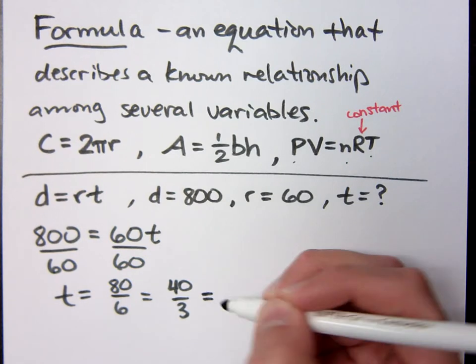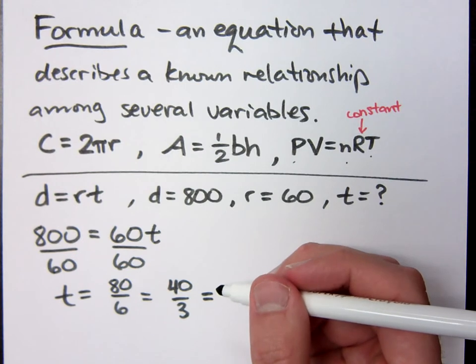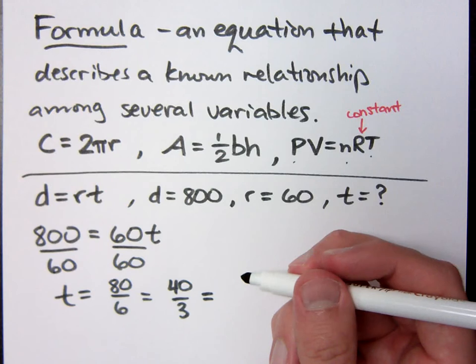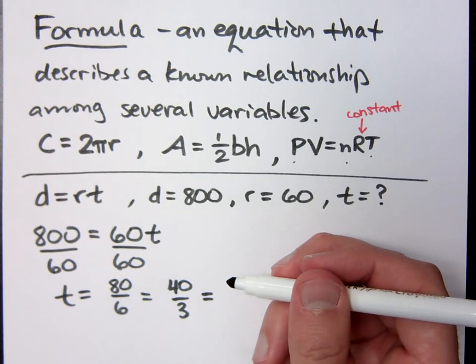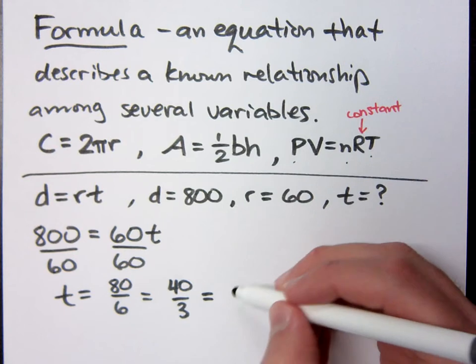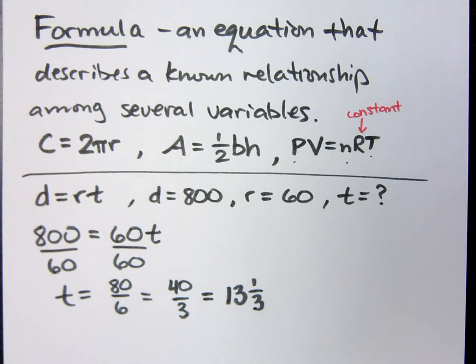If you convert this to a mixed number, what do you get? Because we were talking about time. What makes more sense to us? Hours. Right, so this is in hours, but make it into a mixed number. Because if I say it's going to take me 40 thirds hours, no one's going to be happy with me. 13 and a third hours, right? So it's 13 hours and 20 minutes.